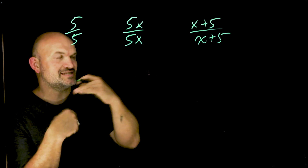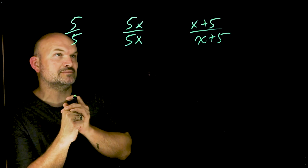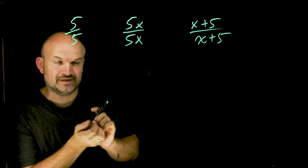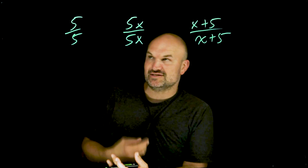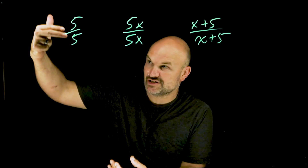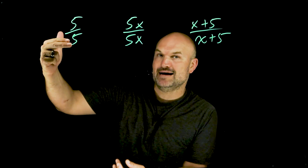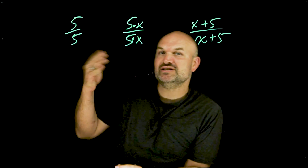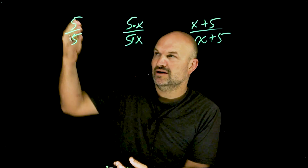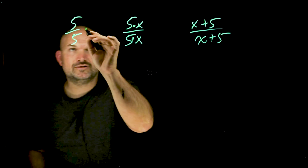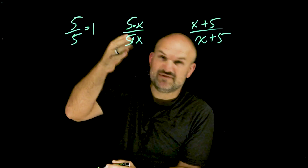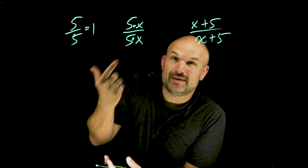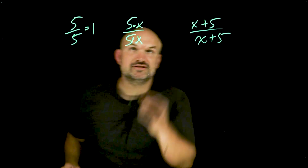The first thing I always like to describe or discuss with students when talking about simplifying rational expressions is to understand the division property. The division property says whenever you have a term or an expression in the numerator as well as in the denominator that is separated by multiplication, then you can divide those terms out — it's equal to one. We all know five divided by five is equal to one. Similarly, a variable or expression X divided by X is also equal to one.